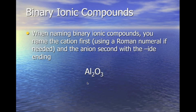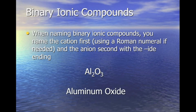When naming this binary ionic compound, we name the cation first, use a Roman numeral only if it's D-block, then give the anion the -ide ending. So for aluminum and oxygen: aluminum stays the same because it's not D-block, and oxygen gets -ide added, giving us aluminum oxide.